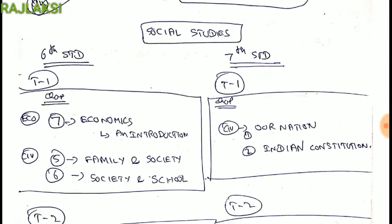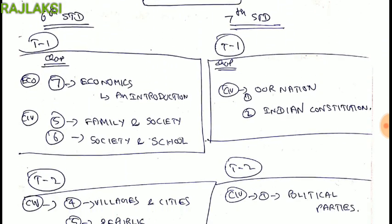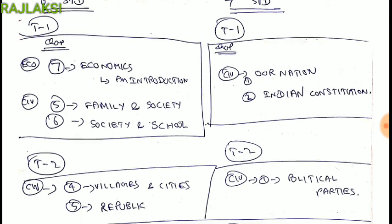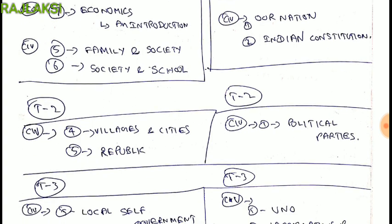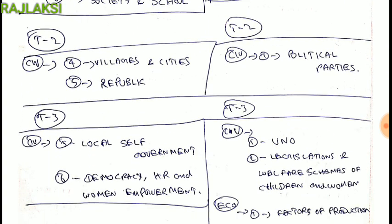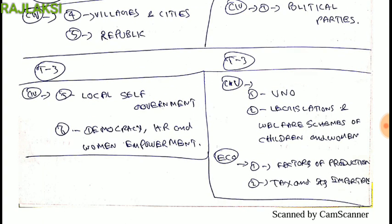This is the 6th standard. This is the 7th standard. Term 1: our nation, Indian constitution. Term 2: political parties. Term 3: civics, UNO.